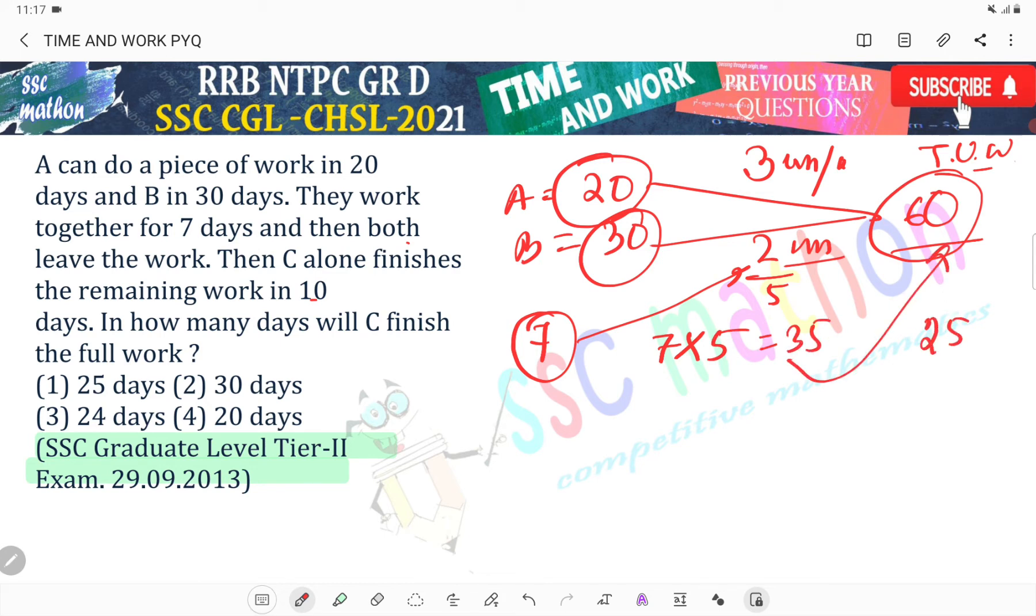So 25 units remaining. Then C alone finishes the remaining work in 10 days. So 25 units in 10 days, then C does in 1 day 2.5 units.